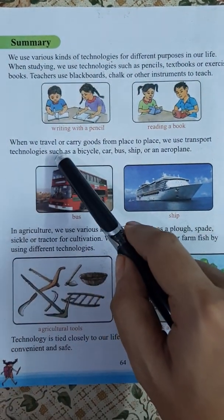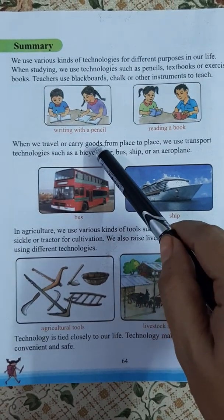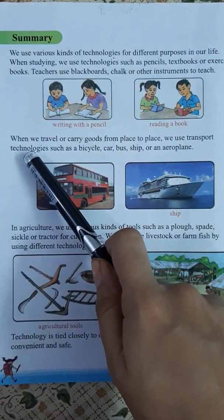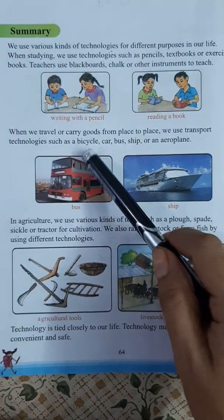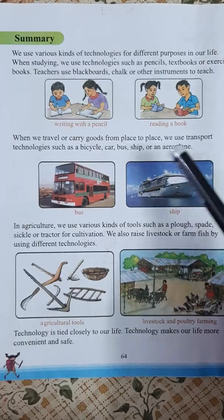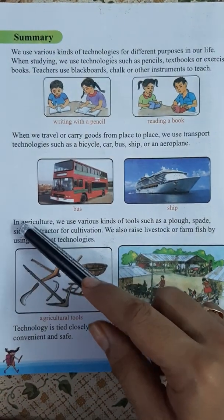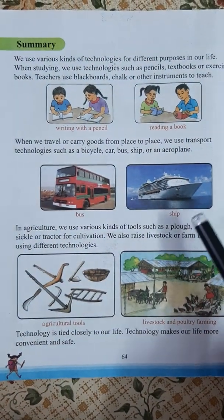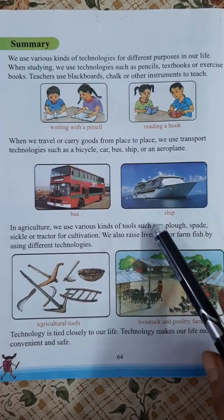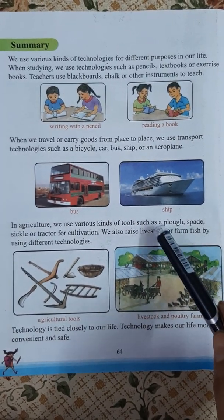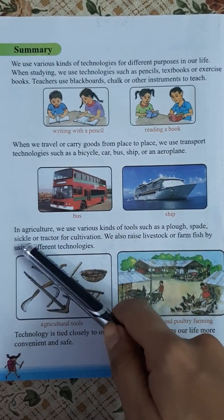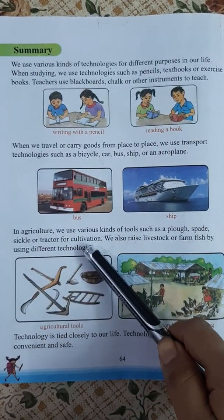When we travel or carry goods from place to place, we also use transport technologies such as bicycle, car, bus, ship or airplane. In agriculture, we also use technology — spade, plow, sickle or tractor for cultivation.